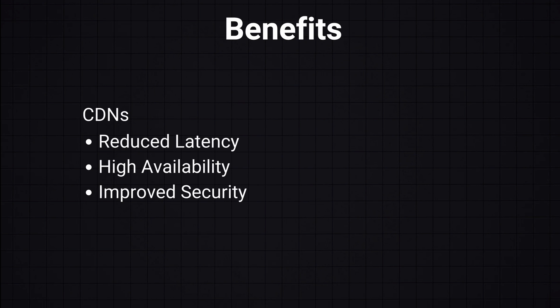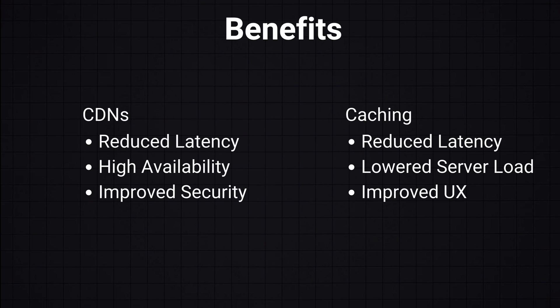Some of the benefits of CDNs are reduced latency — by serving content from locations closer to the user, CDNs significantly reduce latency. They also add high availability and scalability, as CDNs can handle high traffic loads and are resilient against hardware failures. CDNs also improve security, because many offer features like DDoS protection and traffic encryption. The benefits of caching include reduced latency through fast data retrieval, lower server load by reducing requests to the primary data source, and overall faster load times leading to a better user experience.